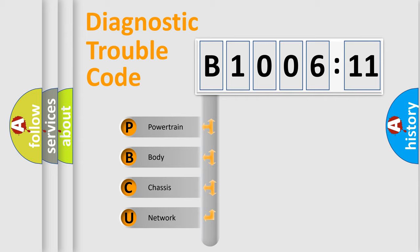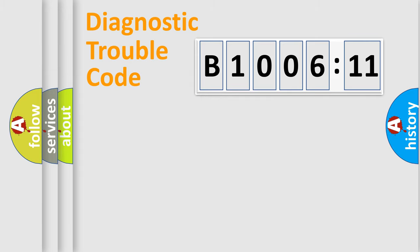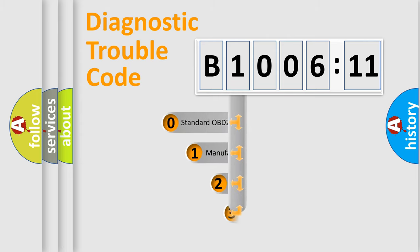We divide the electric system of the automobile into four basic units: Powertrain, Body, Chassis, and Network. This distribution is defined in the first character code.